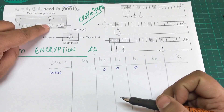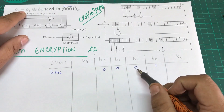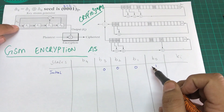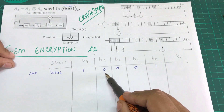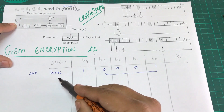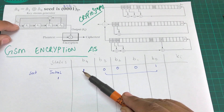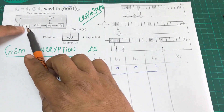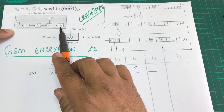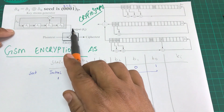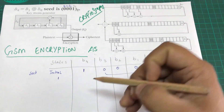For the initial state, we XOR b1 and b0 together. B1 is 0 and b0 is 1 — XOR of 0 and 1 gives 1. So b4 at the initial state is 1. The seed values are 0, 0, 0, 1 and the value at b4 is 1.